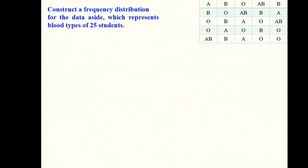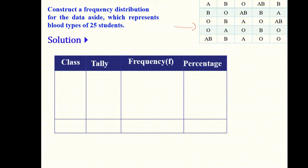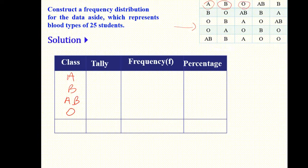Let's construct a frequency distribution for the data representing blood types of 25 students. This is the raw data. We want to create the class, tallies, and frequency. We write the classes as A, B, AB, and O — these are the blood type variable, the qualitative variable.